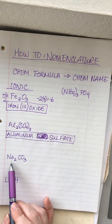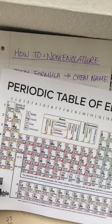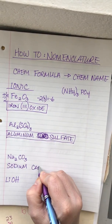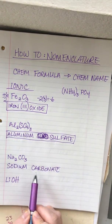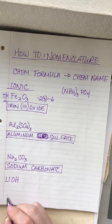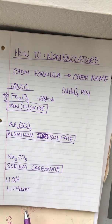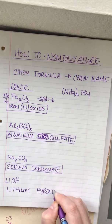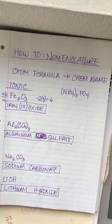Next, Na is sodium. Sodium is a group 1 metal so we don't need to write the charge. The polyatomic ion CO₃²⁻ is carbonate, so the name is sodium carbonate. Lithium is also a group 1 metal so no charge is needed, and OH⁻ is hydroxide — another polyatomic ion to memorize — giving lithium hydroxide.